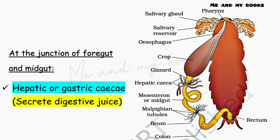These are the parts of the foregut: mouth, pharynx, esophagus, crop, and gizzard. At the junction of foregut and midgut, there is a structure called hepatic caeca or gastric caeca. Its function is to secrete digestive juice, which helps in digestion.